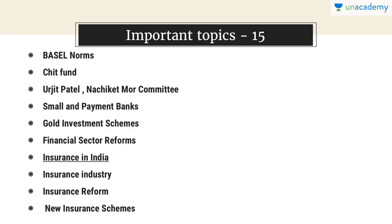The Basel norms, Jet Fund or the Nachiket Mor Committee, small and payment banks, gold investment schemes, financial sector reforms, and financial inclusion — Jan Dhan Yojana, Gold Monetization Scheme, and Sovereign Gold Bonds — these are all important.